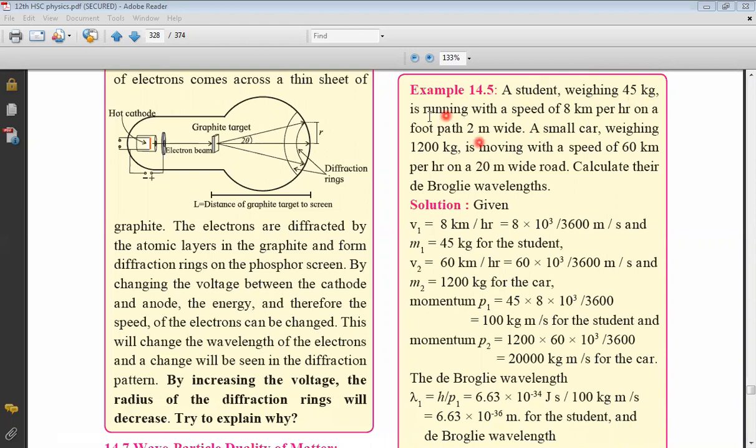A student weighing 45 kg is running with a speed of 8 km per hour on a footpath 2 meter wide. A small car weighing 1200 kg is moving with a speed of 60 km per hour on a 20 meter wide road. Calculate their de Broglie wavelengths. So these are the numericals to calculate de Broglie wavelength.